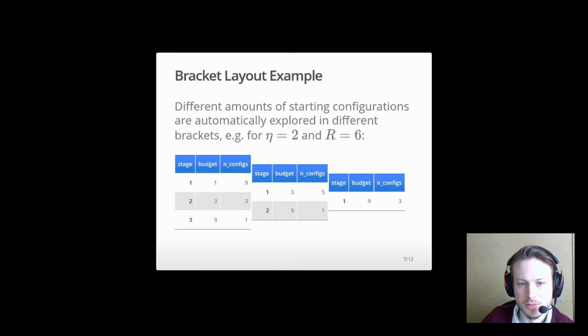Here is an example with eta equals 2 and R equals 6. As we can see, the first bracket starts with 9 configurations, while the last one is only allowed to have 3.